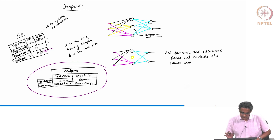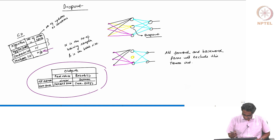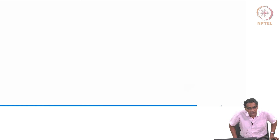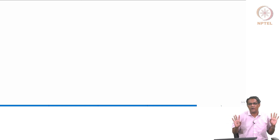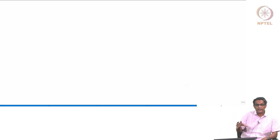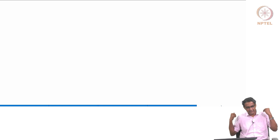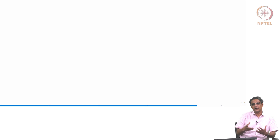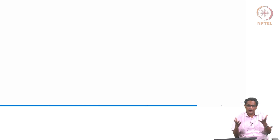Coming back to dropout. The idea behind dropout is that you do not want only a few neurons to take on all the load. When you make it a free-for-all, certain neurons will just let others do the work — just like some people stay quiet and let others handle everything. That is exactly what overfitting is: some neurons take all the load and fit the cost function, while the rest don't learn useful features.